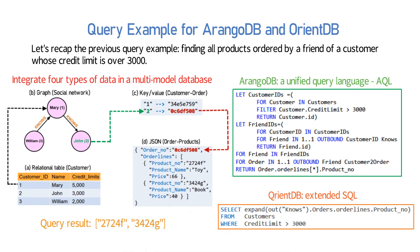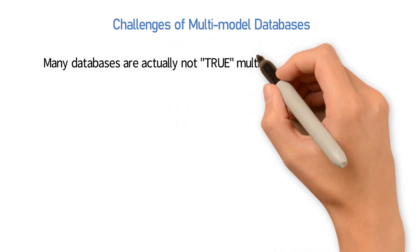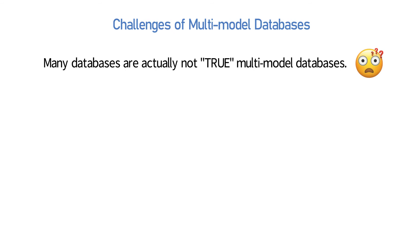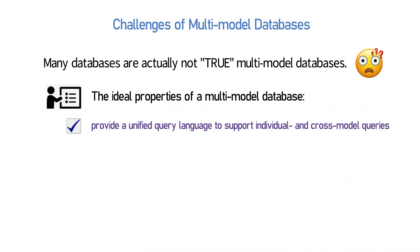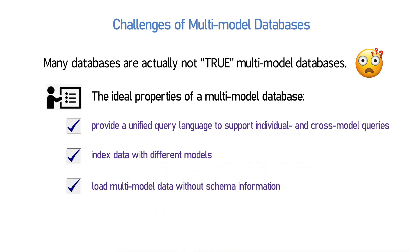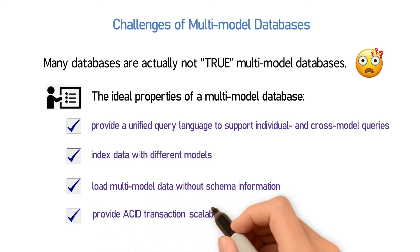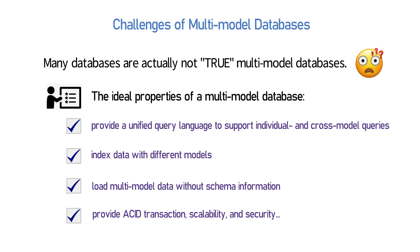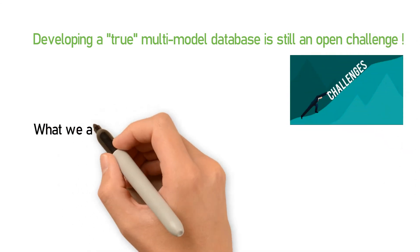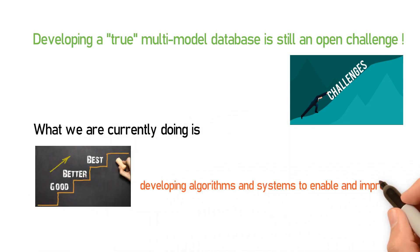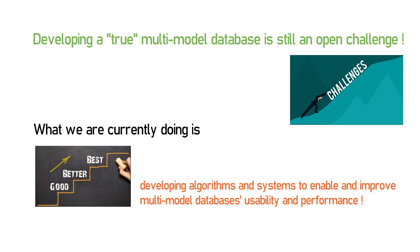Now you have a preliminary understanding of the multi-model database. However, there are still some challenges, because many databases are actually not true multi-model databases. A true multi-model database is expected to have the following ideal properties: first, it should provide a unified query language to support both individual and cross-model queries; second, it can index data with different models; third, it can load multi-model data even without schema information; and finally, it can provide ACID transactions, scalability, and security. We believe developing a true multi-model database is still an open challenge, and what we are currently doing is developing algorithms and systems to enable and improve multi-model databases' usability and performance.